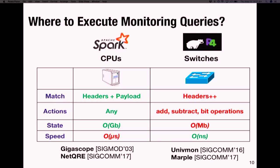In contrast, we can use programmable switches because they can process packets at line rate. However, they offer limited flexibility — there is a limit on how deep they can go, what kind of packet fields they can extract, what operations they can perform, and the amount of stateful memory available is also very limited.